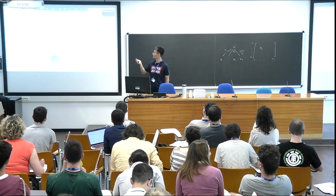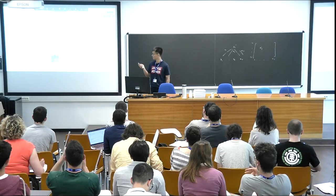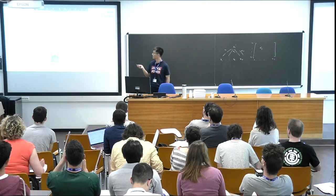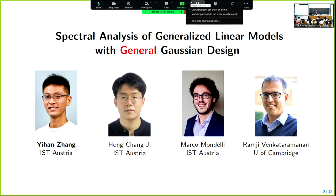I'm going to talk about this thing, but this title is wider than what I'm actually going to talk about. I'm going to talk about this thing, actually. So, Spectral Analysis of Generalized Linear Models with General Gaussian Design. This is based on joint work with Hong Chan-ji at IST and also Manko, who is sitting over there, and Ramjivan Kataramanan at University of Cambridge.